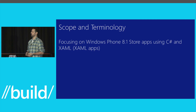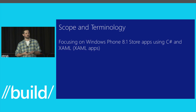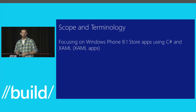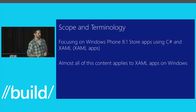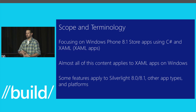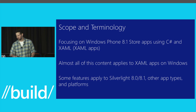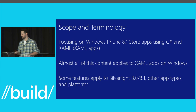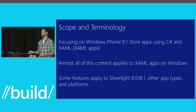So what are we going to cover today? We're going to focus on a demo on Windows Phone 8.1 Store Apps built using C# and XAML. When I say C# and XAML, I do not mean Silverlight — I'm talking about the new converged XAML framework that's shared with Windows. Because of that, almost all of the content I'm showing you today applies to XAML apps on Windows as well. Because I'm from the diagnostics team, many of these features apply to Silverlight 8.0 and 8.1, desktop, and ASP.NET. The debugging features have the broadest reach.